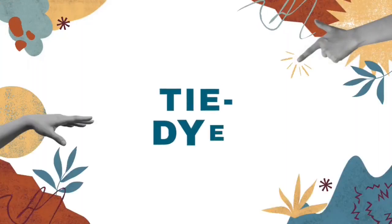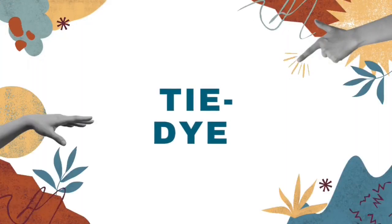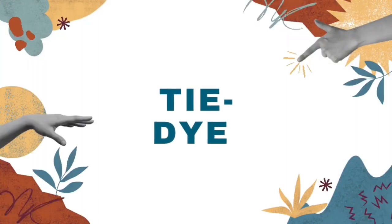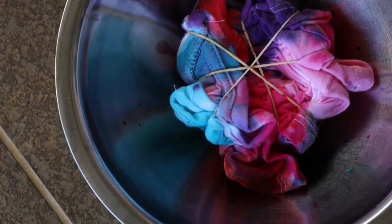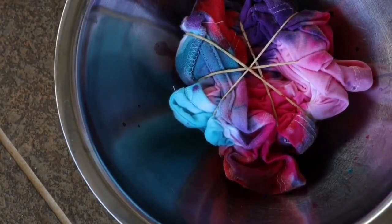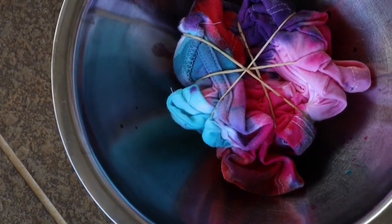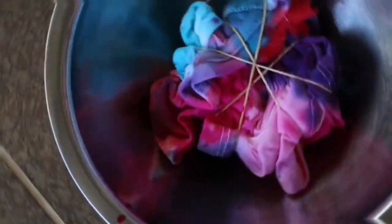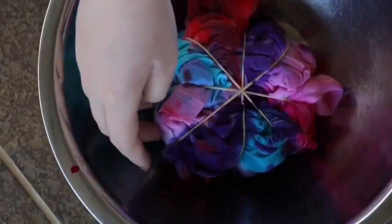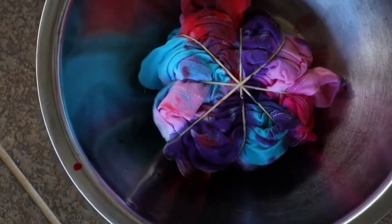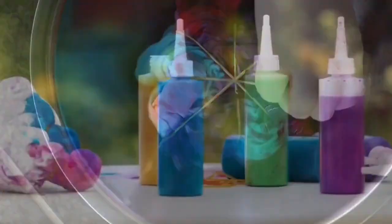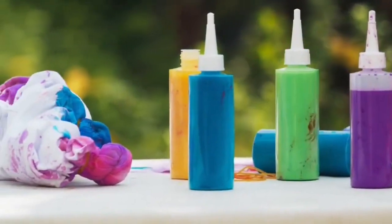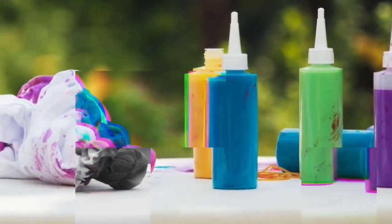First up, we have tie dye. This classic technique involves folding, twisting, and tying fabric with rubber bands before applying the dye. The result is bold, swirling patterns and vibrant bursts of color. Tie dye is a fun and accessible method.